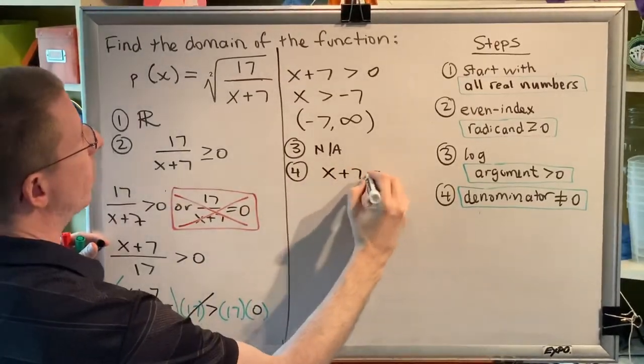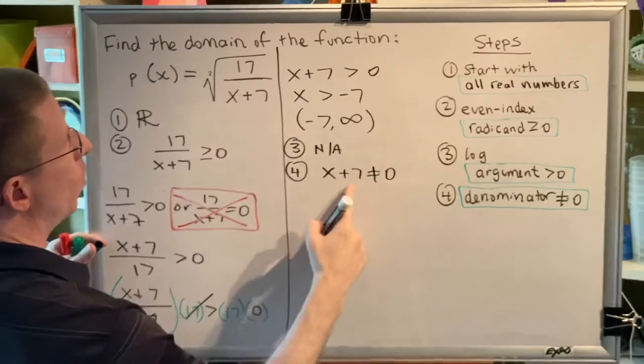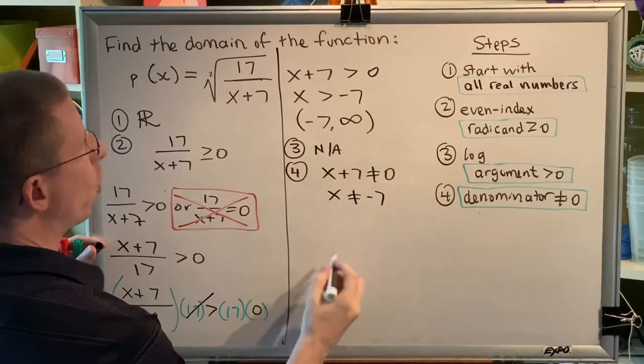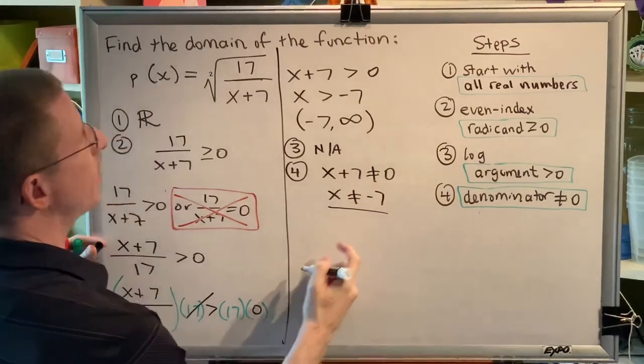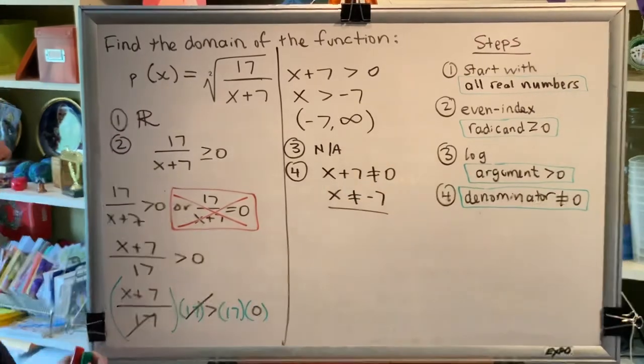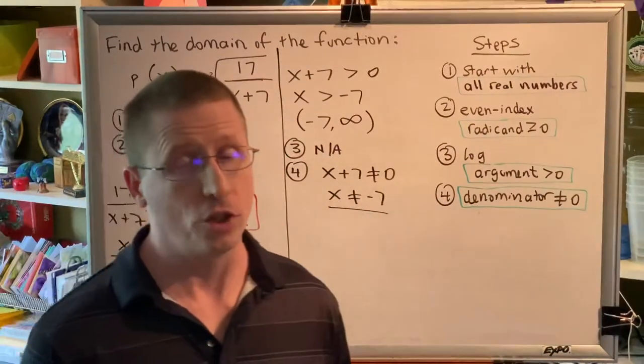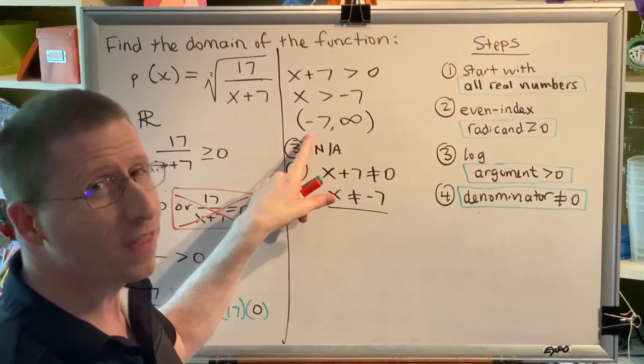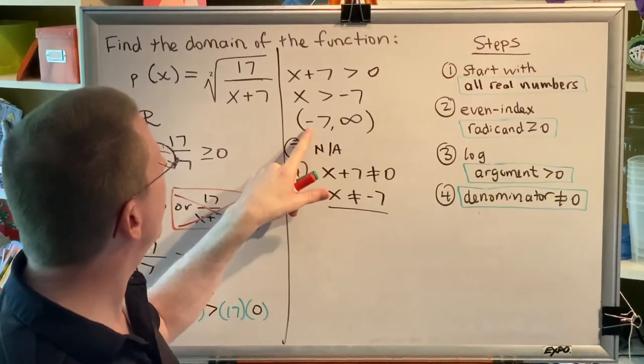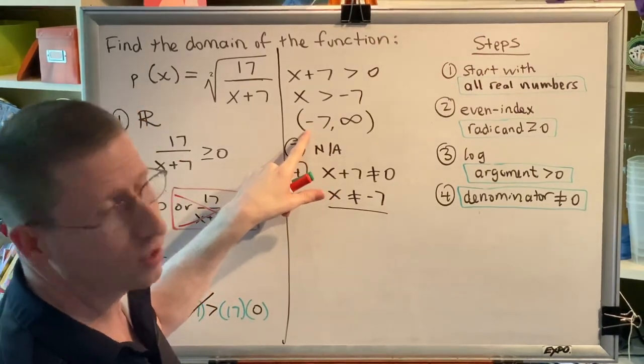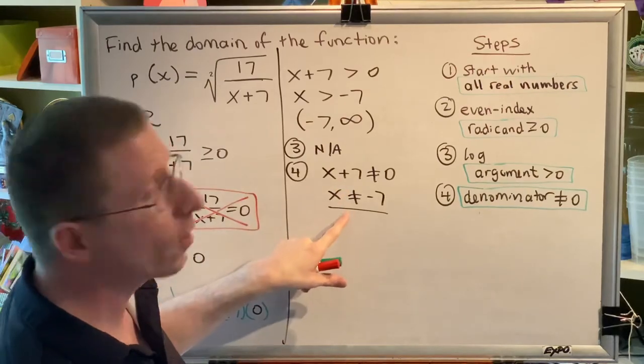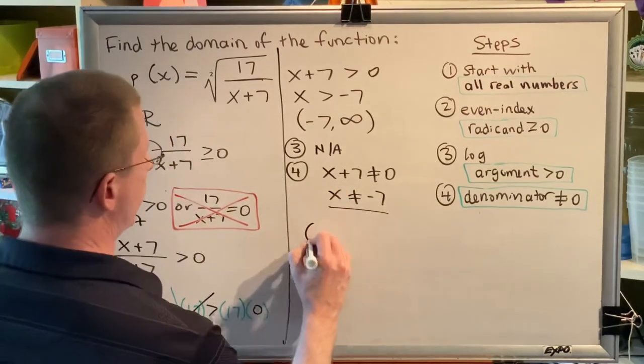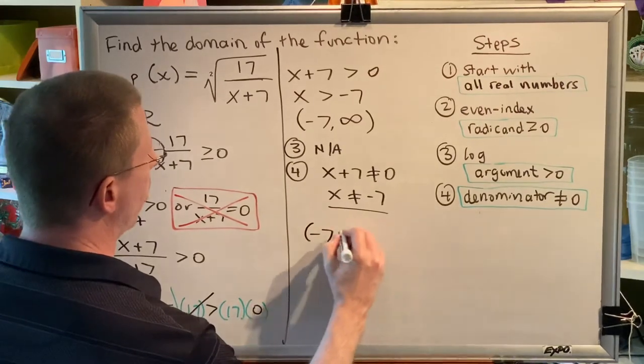So, x plus 7 is not allowed to be zero. Moving this to the other side, I get x is not allowed to be negative 7. So, I have to remove negative 7 from the collection of numbers I had at the end of step 2. There's just one problem. It's already been removed. Notice the parenthesis. Negative 7 is not in this collection of numbers. Therefore, it has already been removed. I can't remove it again. And my final answer to this problem is negative 7 comma infinity.